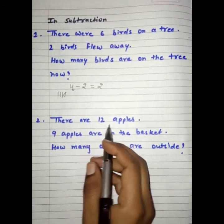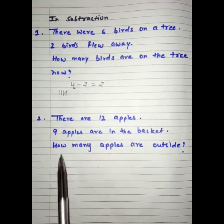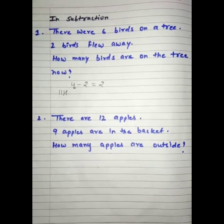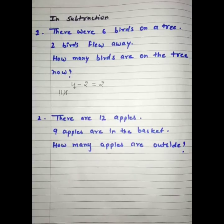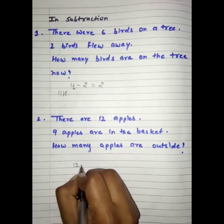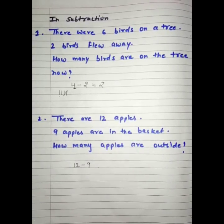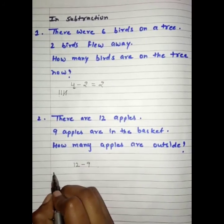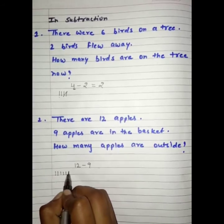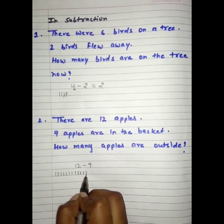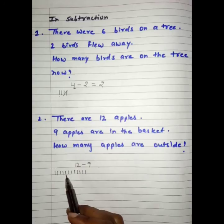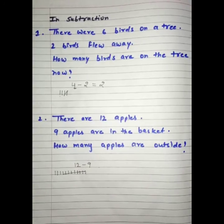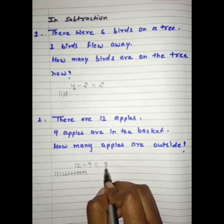Students, see the next question. There are 12 apples. 9 apples are in the basket. How many apples are outside? Total 12 apples hai aur 9 apples basket mein hai. Bahaar kitnay apples bachye? We have to do 12 minus 9. Hum 12 lines draw karenge: 1 through 12. Ab 9 minus kar denge: 1 through 9. Kitnay bachye: 1, 2, 3. We have 3 apples.